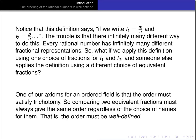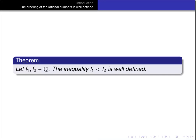Comparing two equivalent fractions has to always give the same result regardless of the choice of names for them. Another way of putting that — saying that the order isn't ambiguous — is that the order has to be well-defined. So our theorem is that if we have two rational numbers f1 and f2, then the inequality f1 less than f2 is well-defined.